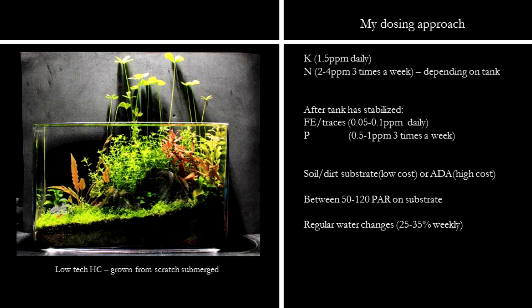However, when it comes to phosphates and iron, these are great for bringing out the colors in the plants. But I will only dose these two more regularly after the tank has stabilized — when the plants have been there for a couple of weeks and have grown their roots into the substrate. If the tank is not stabilized yet, I find that phosphates and iron can exacerbate algae issues.